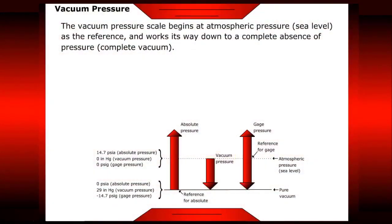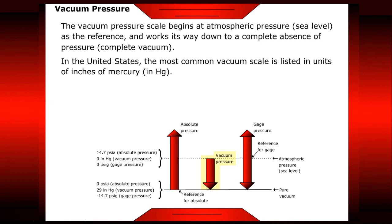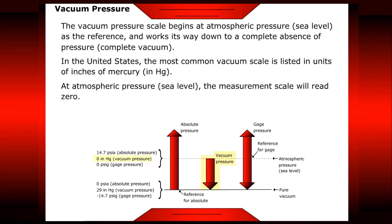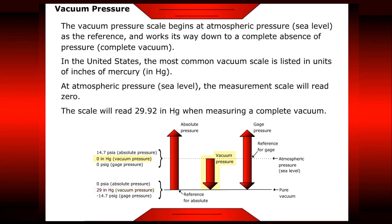Vacuum pressure. The vacuum pressure scale begins at atmospheric pressure or sea level as the reference and works its way down to a complete absence of pressure — a complete vacuum. In the United States, the most common vacuum scale is listed in units of inches of mercury. At atmospheric pressure or sea level, the scale will read zero, and it will read 29.92 inches of mercury when measuring a complete vacuum.